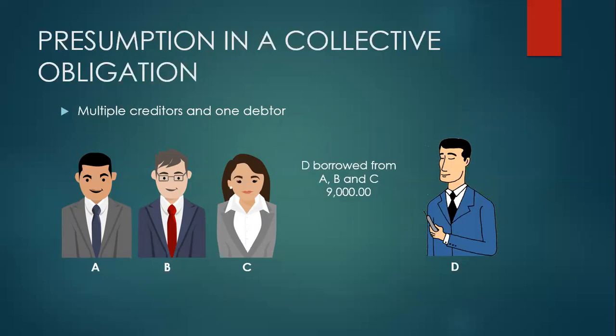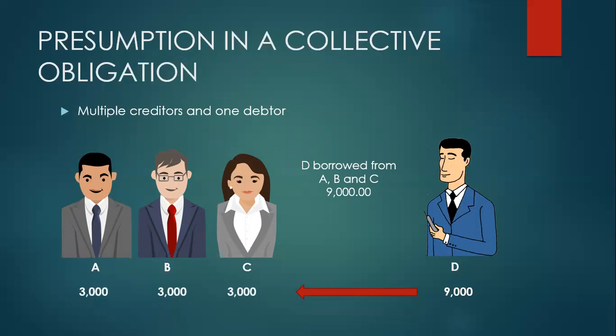The same is true if there are multiple creditors and one debtor. For example, D borrowed 9,000 from creditors A, B, and C. Since there is no express stipulation of solidarity, nor does the law or nature require it, the obligation is merely joint. A cannot collect the entire 9,000 from D — A's right is only up to 3,000. B can only collect 3,000, and the same for C, because the obligation is joint.